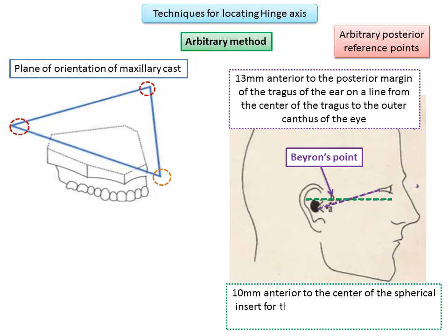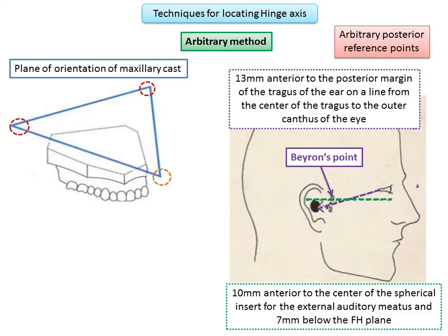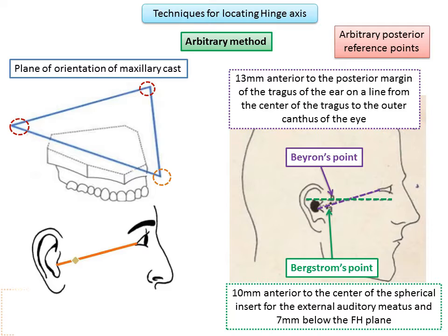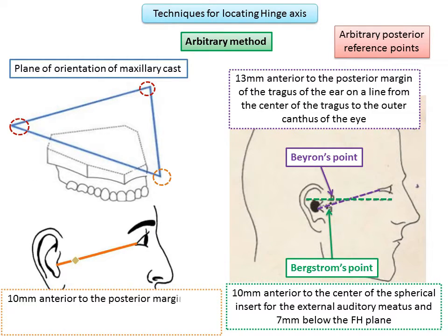Birdstrom's point has both horizontal and vertical coordinates: 10 millimeters anterior to the external auditory meatus (horizontal), and 7 millimeters below the Frankfurt horizontal plane (vertical). Another point worth mentioning is Geices' point — it is 10 millimeters anterior to the posterior margin of the tragus on a line from the center of the tragus to the outer canthus of the eye.